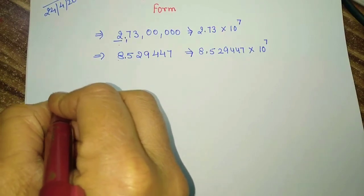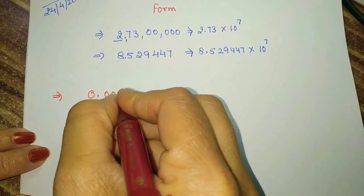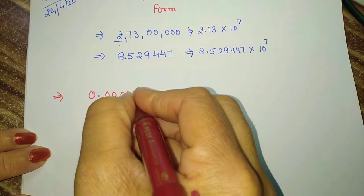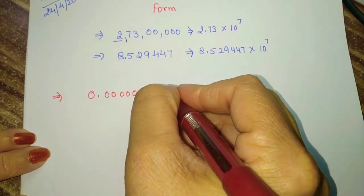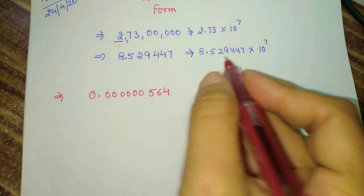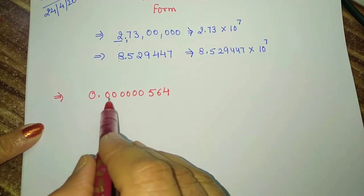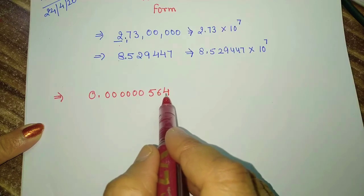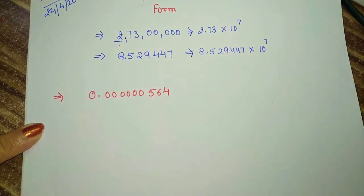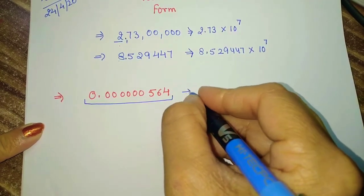For example, they have given 0.000000564. Now students, observe how many digits are there after the decimal: 1, 2, 3, 4, 5, 6, 7, 8, 9. After the decimal there are 9 digits.